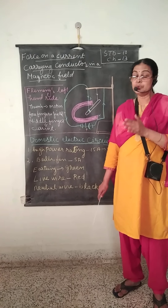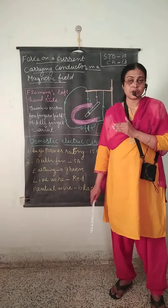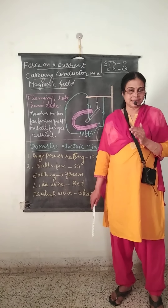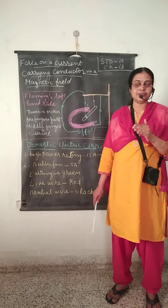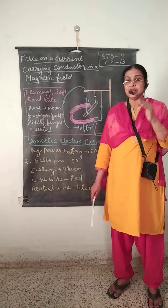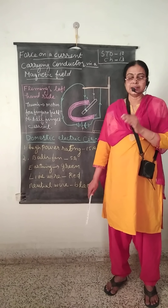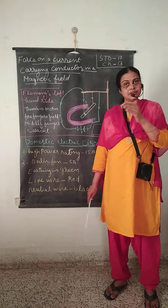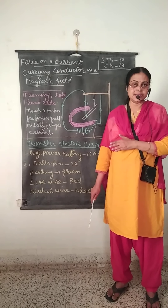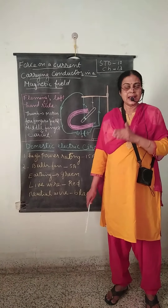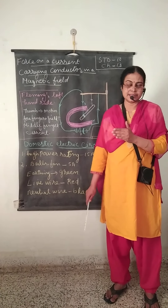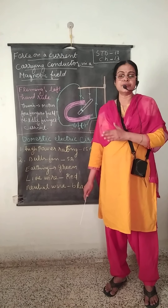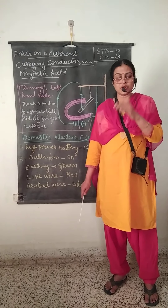Now let us discuss about the fuse wire. Fuse wire is made up of an alloy of tin and lead. The peculiarity of this metal is that it has a very low melting point. If there is overloading or a short circuit, there is excess flow of current, which can spoil the appliance or cause electric shock to the person handling it. To avoid that, fuse wire is used.